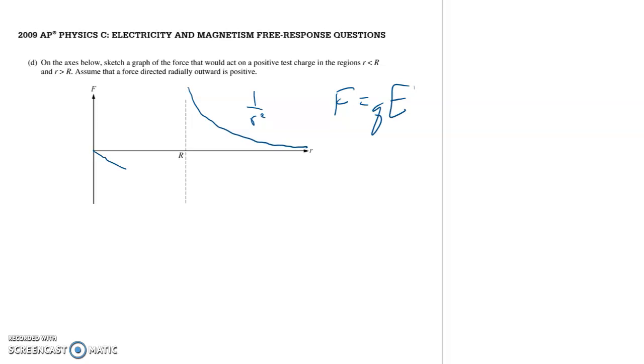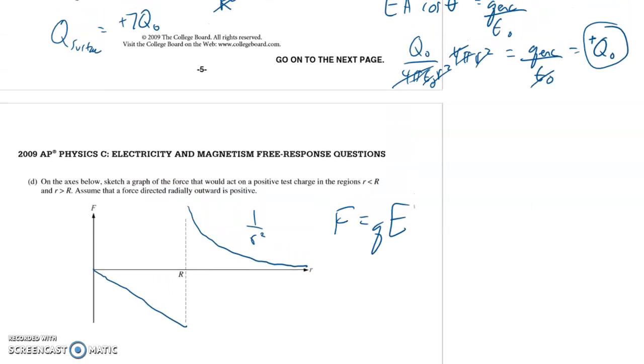And so going back to the graph, direct proportion is a straight line, but it's a straight line in the negative section of the graph. So you have this discontinuity here where the positive 7q charge kicks in. All right, hope that made sense.